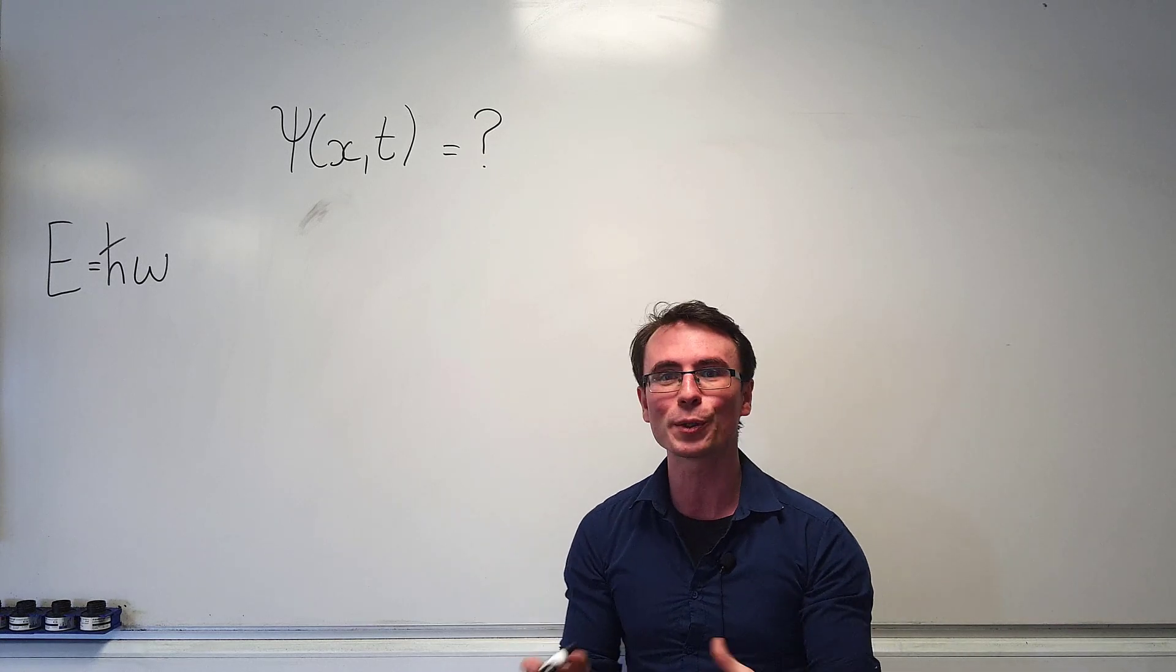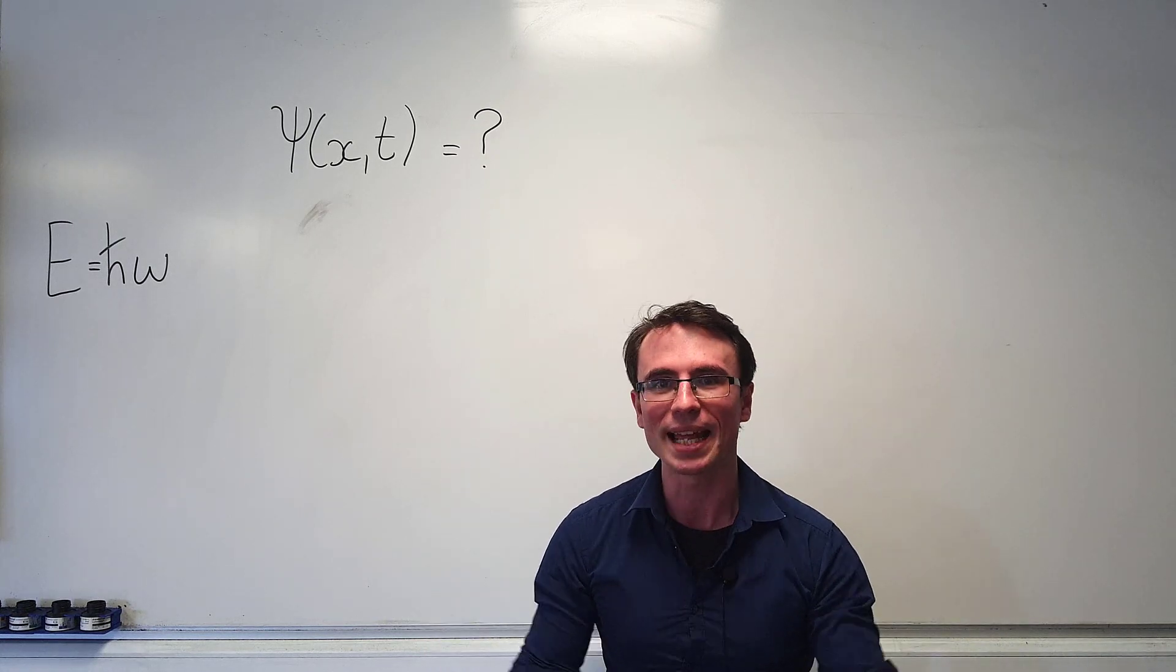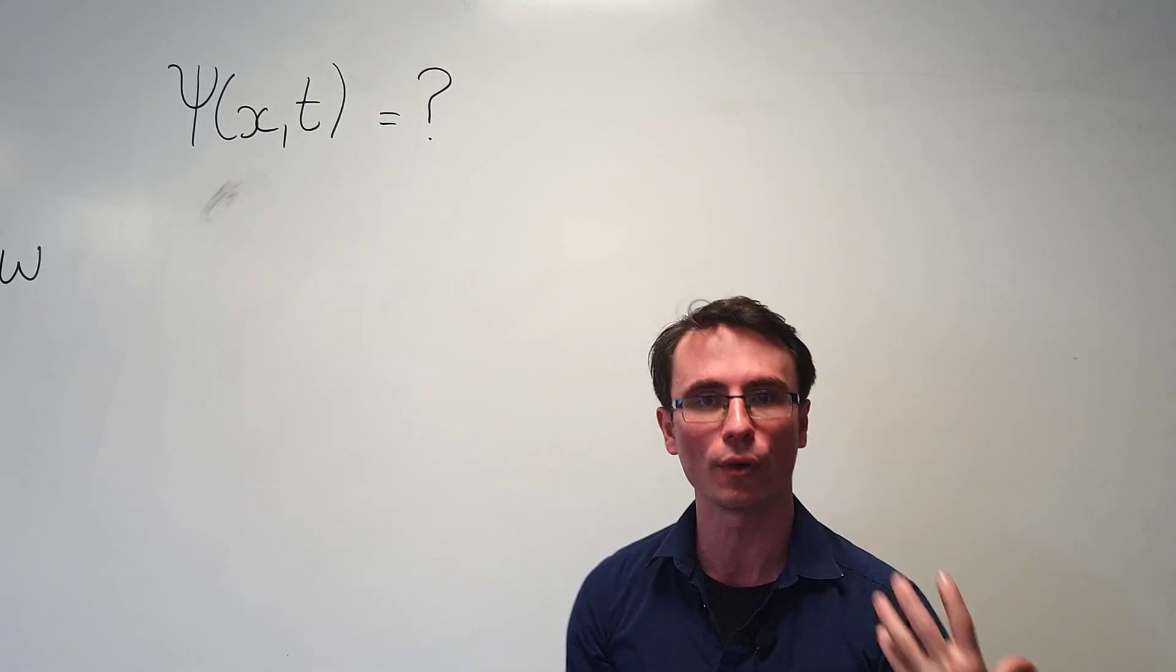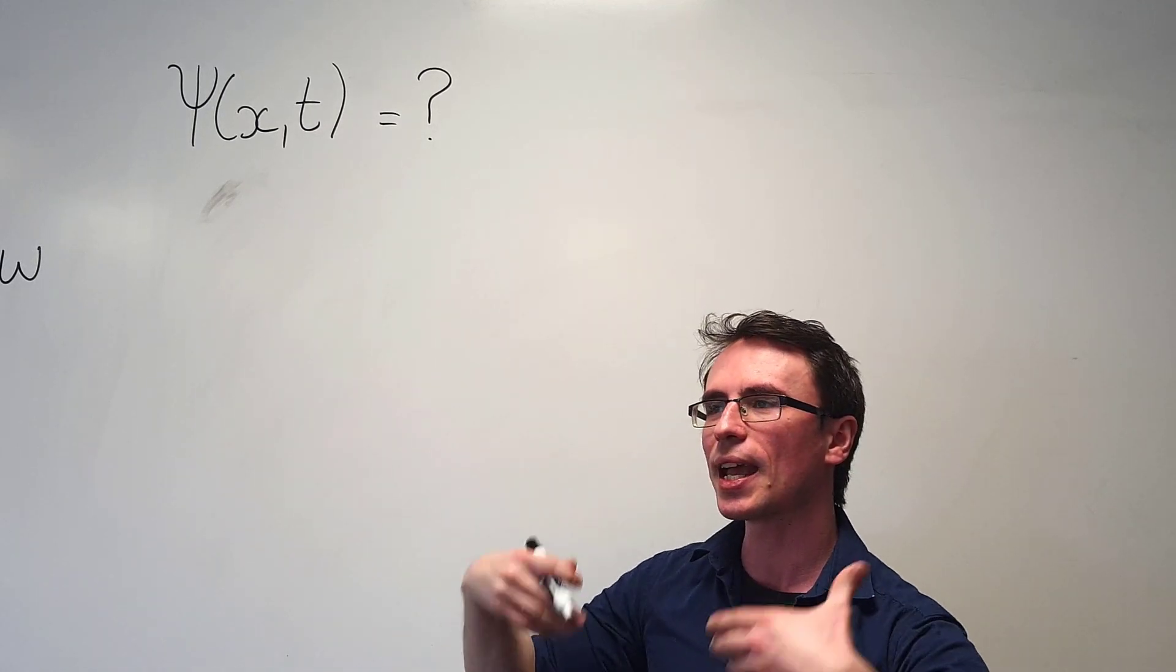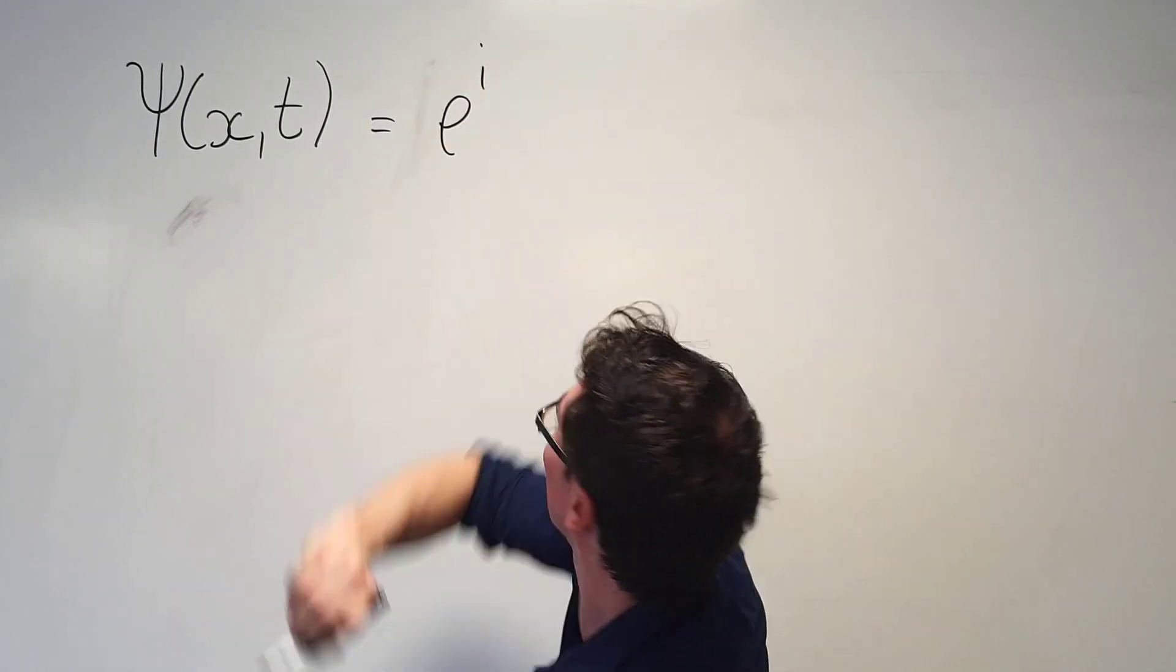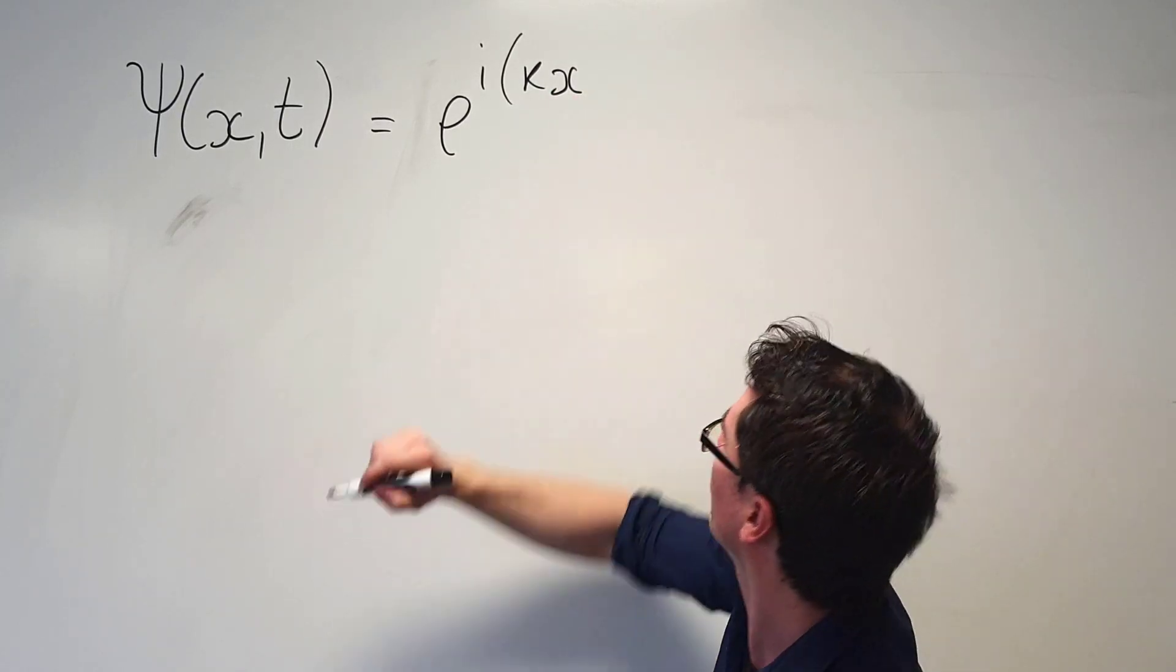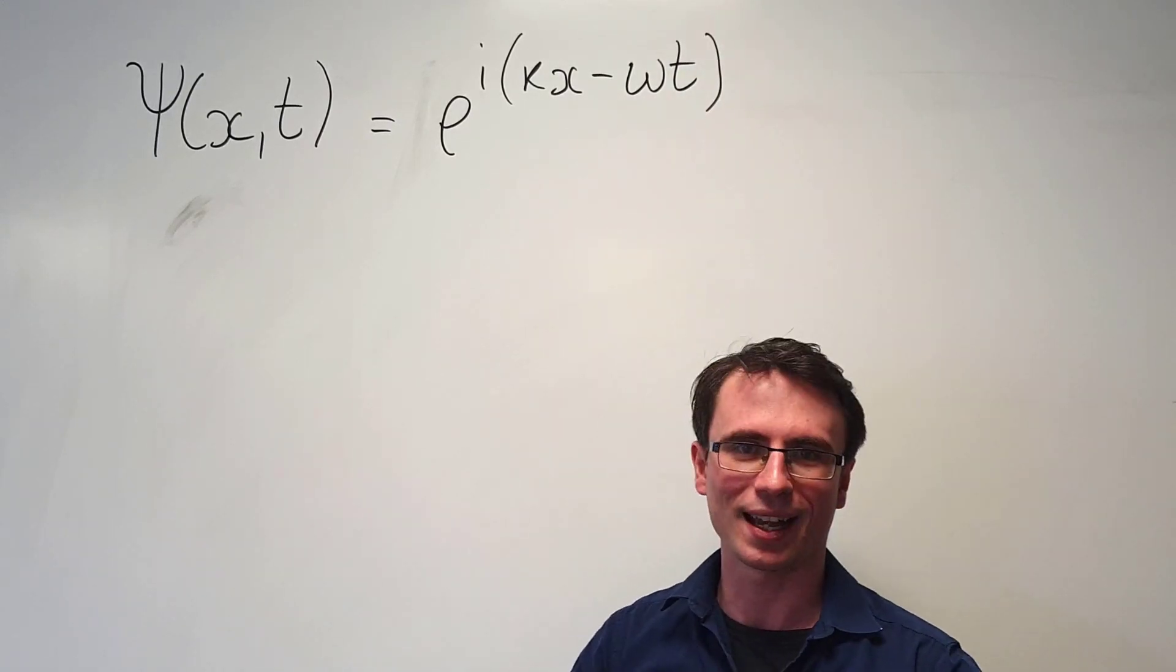So what we really needed was a wave equation for matter. Normally in physics classes you're given an equation and then you try and solve it, but now what we're going to do is think of a solution and then try and guess the equation for it. Let's assume that psi as a function of position and time is a solution to a general wave equation. We can invoke complex numbers, so e to the i kx where k is just a wave number, and let's take away omega t where omega is the angular frequency.